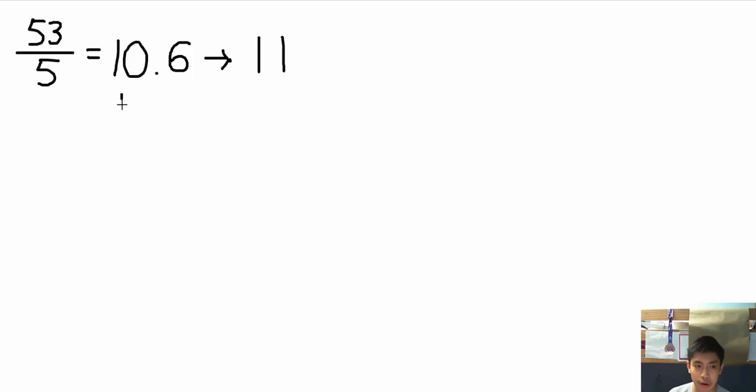The same goes for 10.5, 10.4, 10.3, all the way to 10.0, and all the way up to 10.9. So basically, any decimal, as long as it's 10, we will round it to 11. That is rounding up.